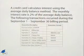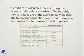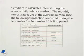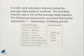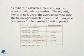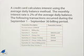Our next example deals with finding the average daily balance. A credit card calculates interest using the average daily balance method. The monthly interest rate is 2% of the average daily balance. The following transactions occurred during the September 1st through September 30th billing period.